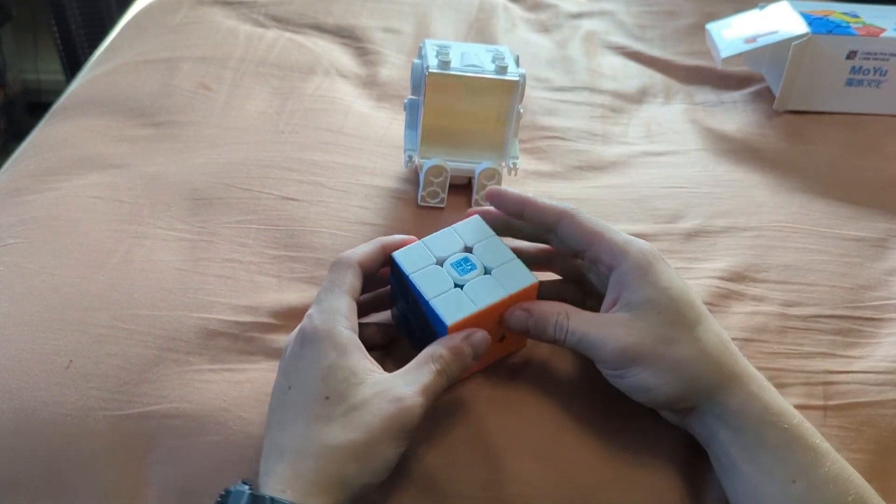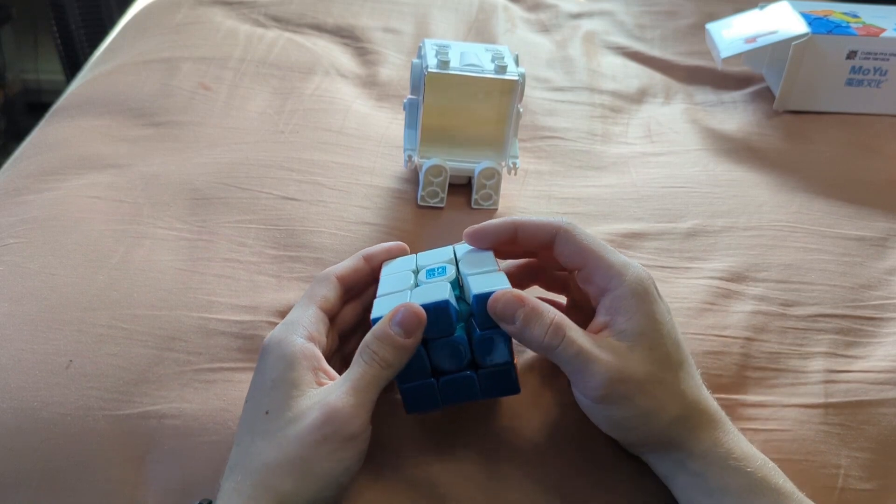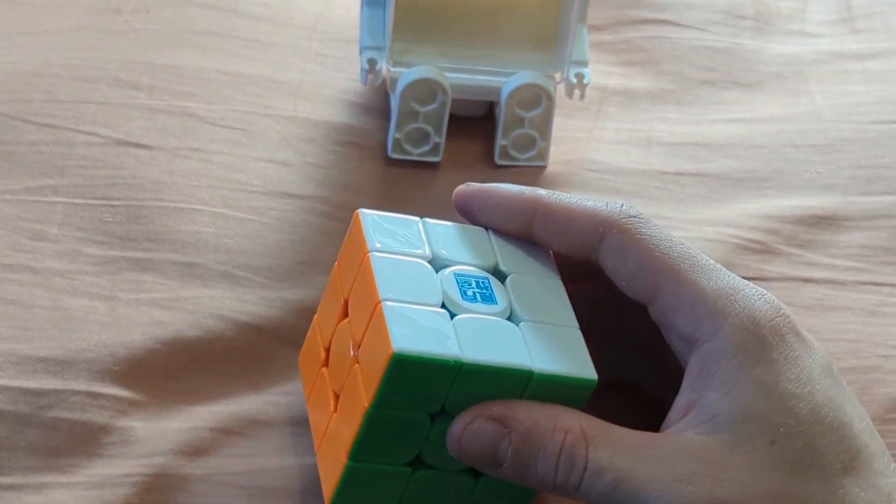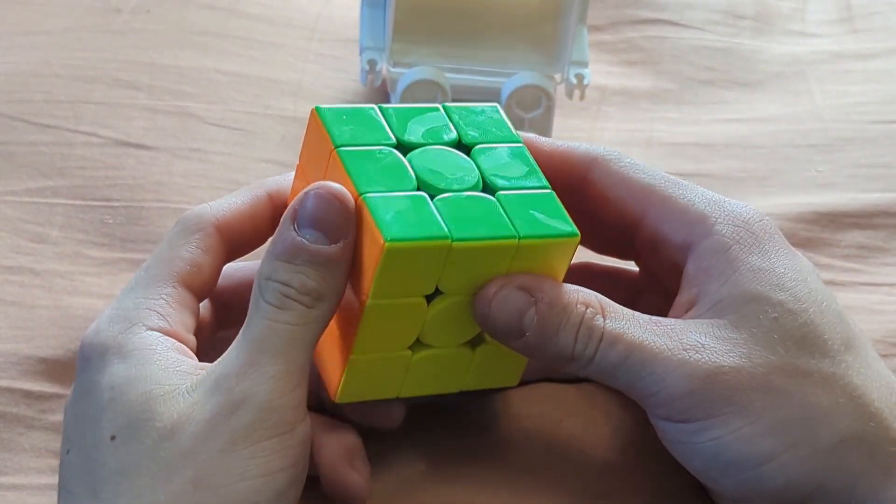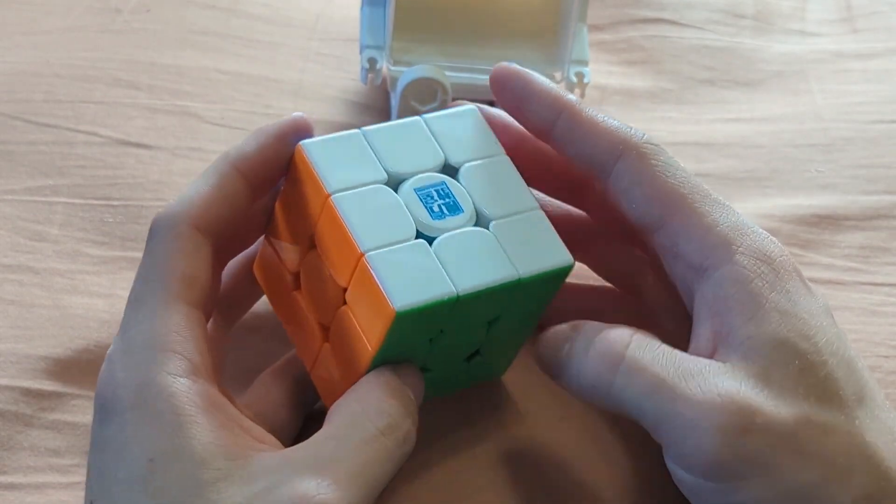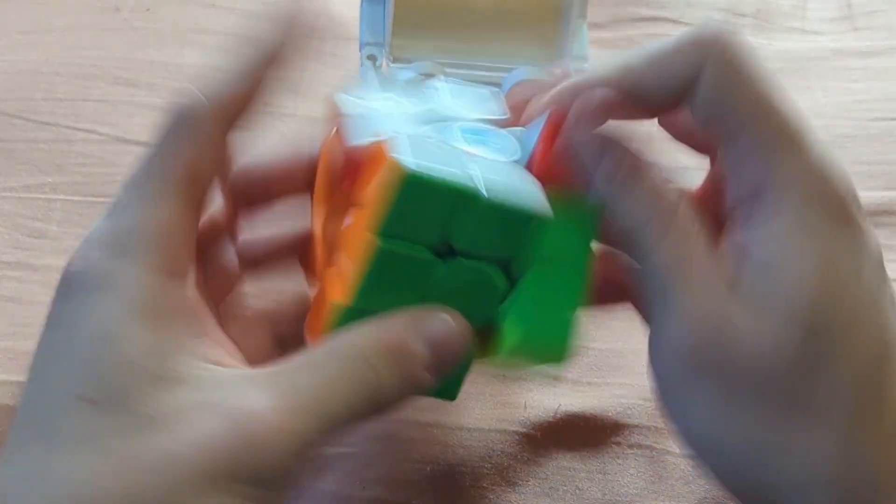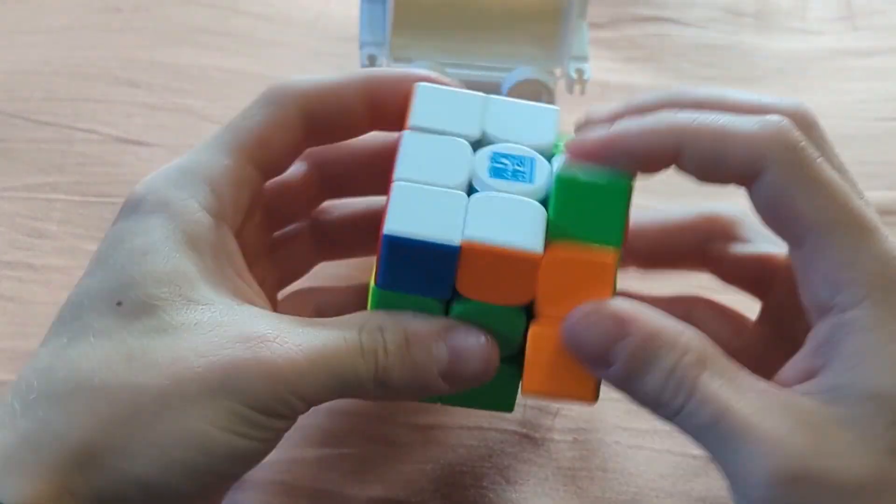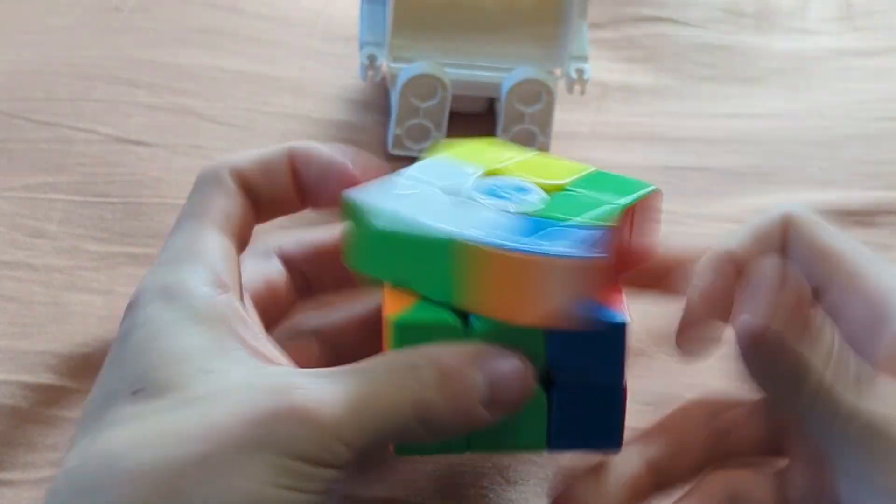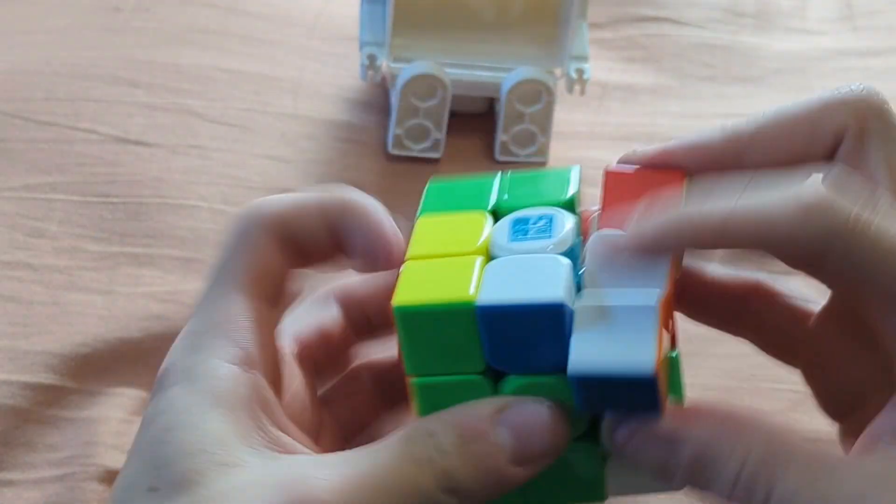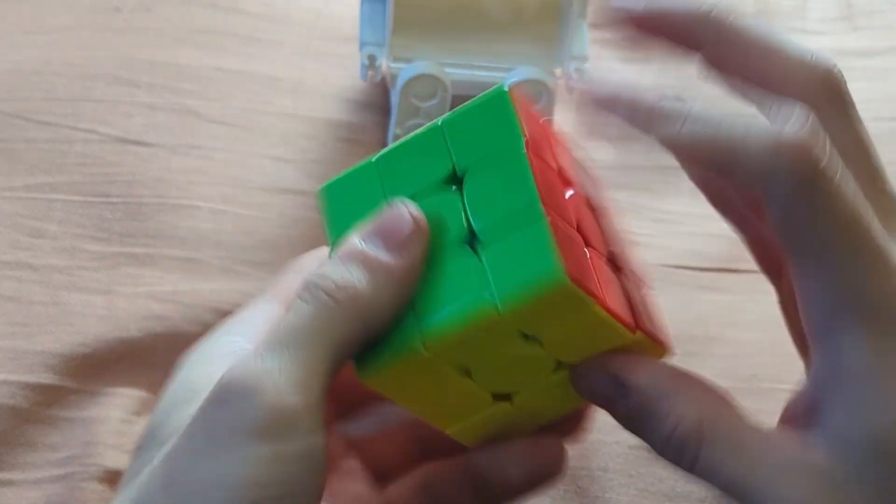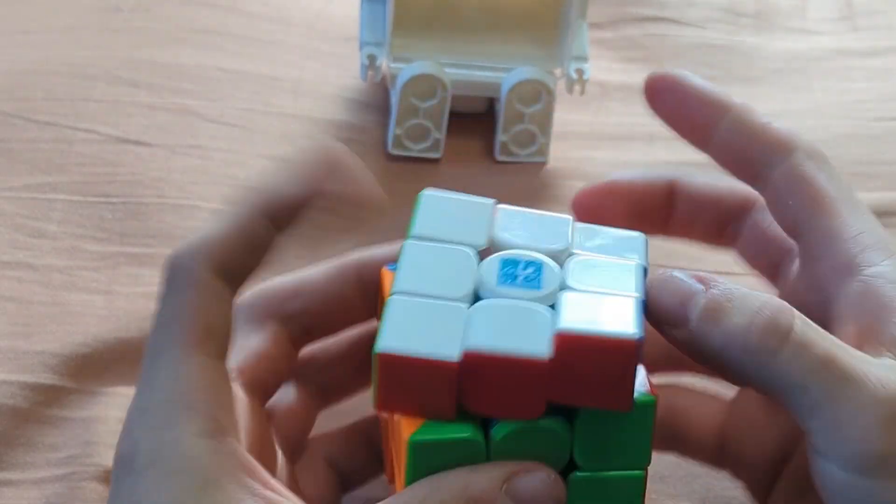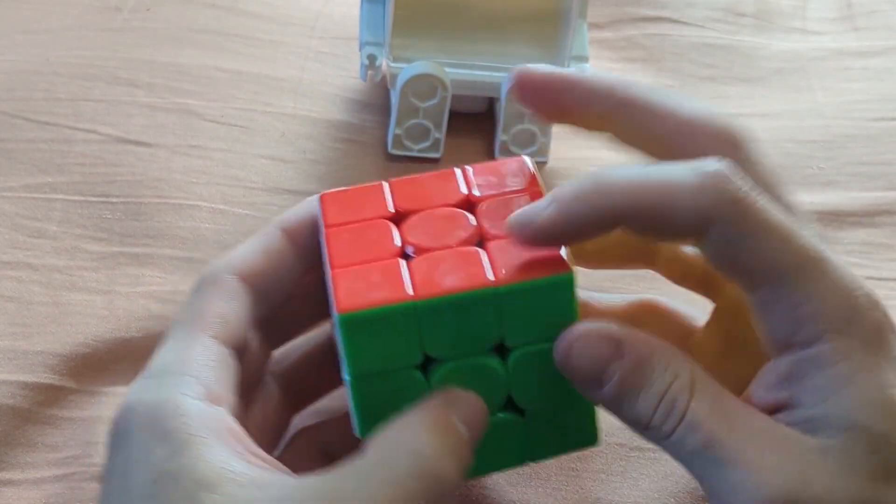It's so cute. So obviously by the teal internals, you obviously know what version this is. It's the maglev ball core UV. Let's do some first turns. Okay, wow.